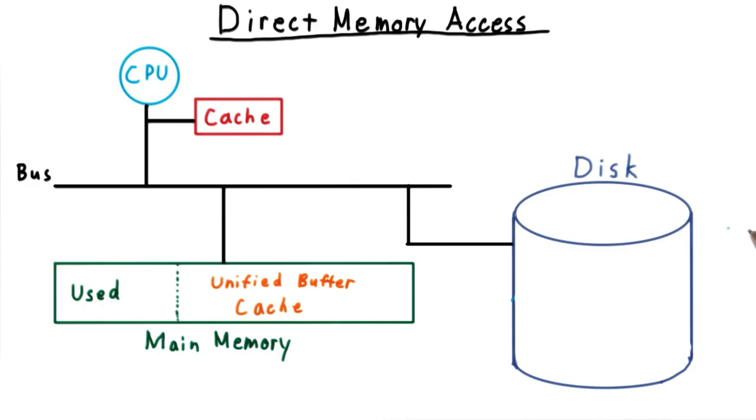One might expect that the CPU had to execute all of the store instructions needed to move data along the bus from memory to disk and vice versa. This would work, but it would be very slow.